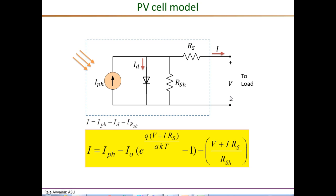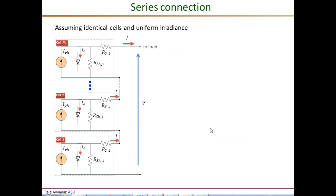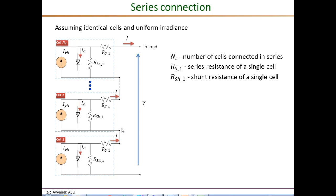This is the circuit schematic of several cells in series: cell 1, cell 2, all the way up to cell NS, where NS is the number of cells connected in series. RS1 is the series resistance of a single PV cell and RSH1 is the shunt resistance of a single PV cell. Since all cells are connected in series, the current through each cell is exactly the same external current I.